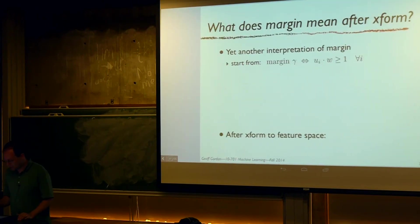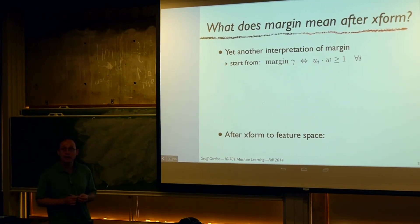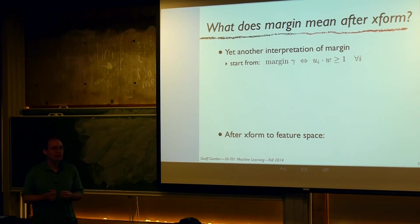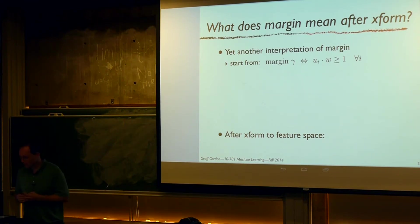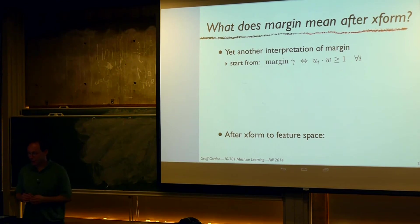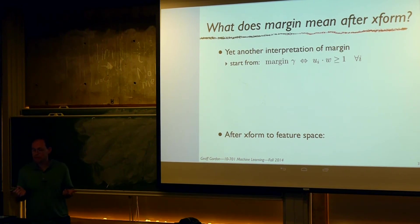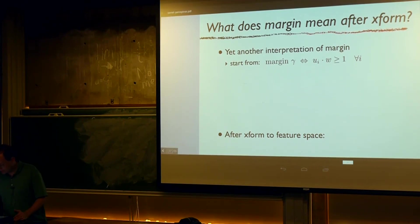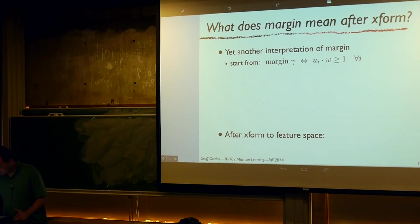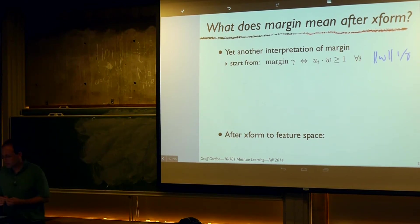To get to the new idea, we look at what the margin means after the feature transform and try to get a better notion of margin. We'll give yet another interpretation of the margin: margin gamma means that u_i dot w is greater than or equal to 1 for all i, and that the norm of w is 1 over gamma.